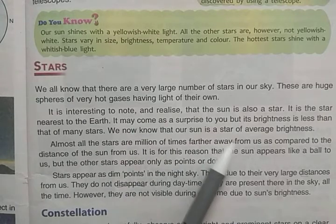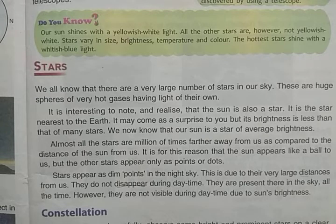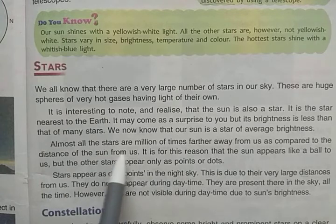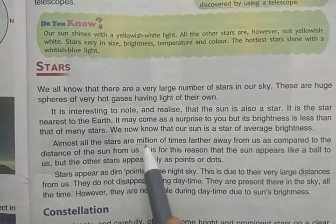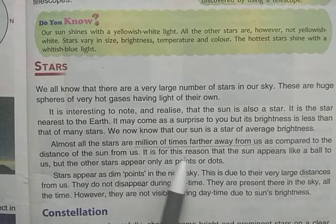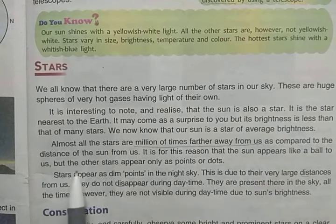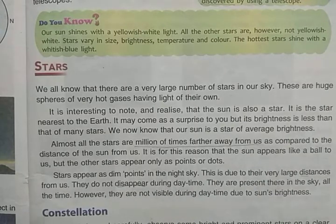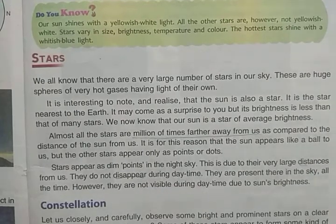Almost all stars are millions of times farther away from us compared to the distance of the Sun from Earth. Because the Sun is so close, it appears like a ball to us, whereas all the other stars appear only as a point or dot in the sky.